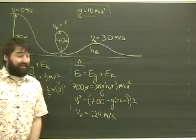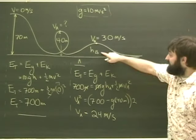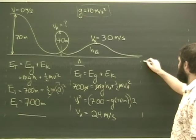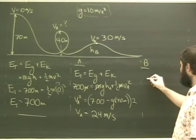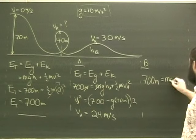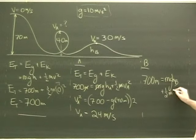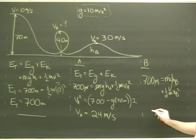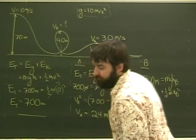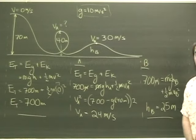Now to find the height of the hill, I do exactly the same thing. Basically, instead of putting HA and VA, I'm just going to put in HB and VB. And I'll skip a few steps for the sake of speed. I can skip basically right to this line. 700m equals mgh plus a half mv squared. Again, my m's will cancel out. And I'll end up with a height which is equal to 25 meters. And we're done.